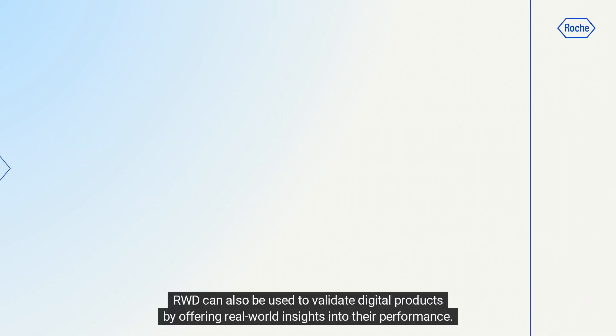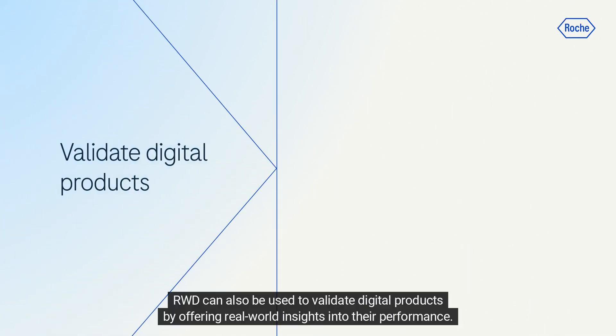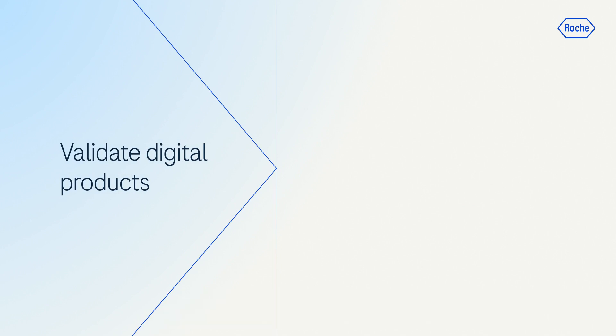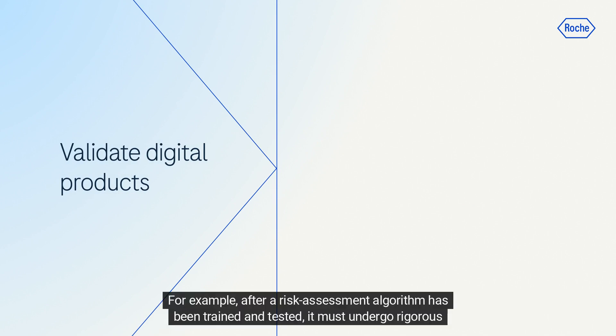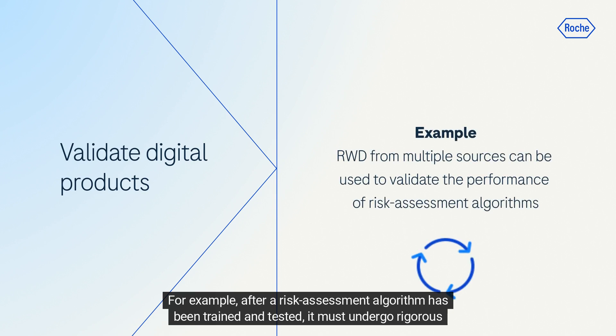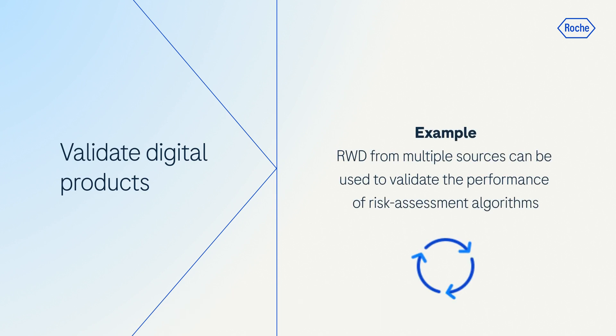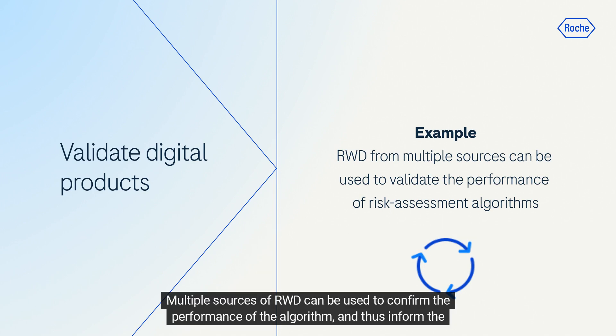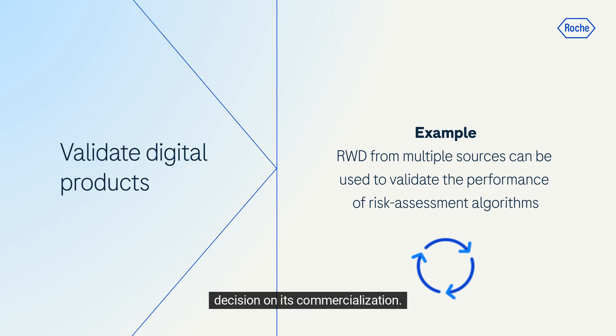RWD can also be used to validate digital products by offering real-world insights into their performance. For example, after a risk-assessment algorithm has been trained and tested, it must undergo rigorous validation. Multiple sources of RWD can be used to confirm the performance of the algorithm and thus inform the decision on its commercialization.